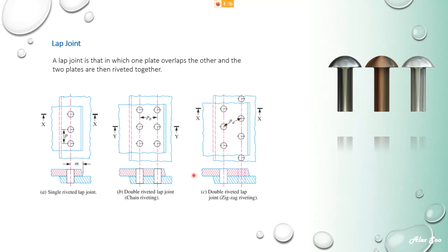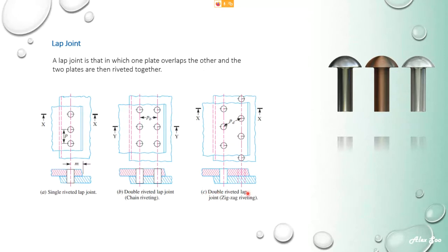This is called a single riveted lap joint because there is only one column of rivets. Even though there are three rivets, the number of rivets in shear is still considered as one for a single riveted lap joint with a single column. For a double column, the number of rivets under shear is considered as two. This arrangement is called chain riveting, and this one is called zigzag riveting. For zigzag riveting in this diagram, it is also double riveted. So n equals two for the chain case, n equals two for the zigzag case, and n equals one for the single column case.